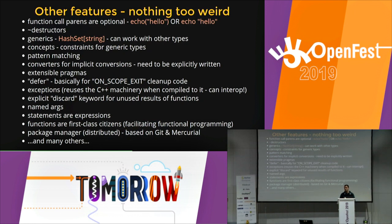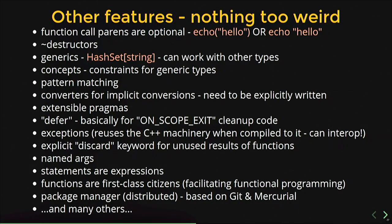Some other cool features: parentheses are optional when calling functions; destructors are available; generics let you write a hash set that works with any type; concepts; pattern matching; implicit conversions via explicit converter declarations so you're explicit about what should be implicitly convertible; an extensible pragma system; defer statements; and exceptions. The discard keyword is one I really like — if a function returns a value and you don't use it, that's an error; you must explicitly discard it. That's a good default now being added to C++ via nodiscard, but it's been in NIM from the start. NIM also has a package manager, unlike C++.